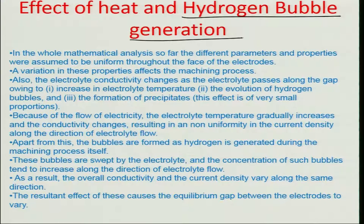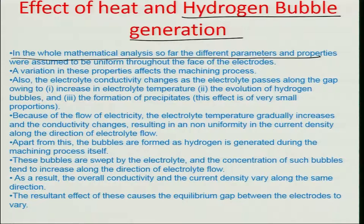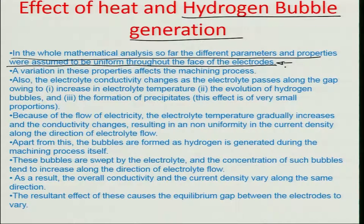Hydrogen is generated as a result of the formation of FeOH from the work piece into the solution. In the whole mathematical analysis so far, the different parameters and properties were assumed to be uniform throughout the phase of the electrode — we never assumed the conductivity to be varying, or for example the temperature to be varying quite a bit.